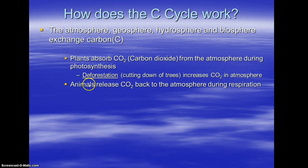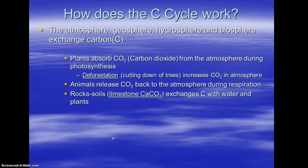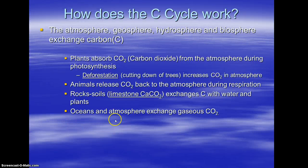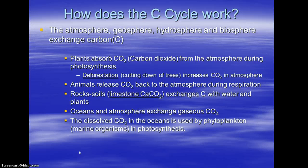Animals and plants release CO2 back to the atmosphere during respiration. Rocks and soil, part of the geosphere, contain limestone or another form of carbon, and they exchange carbon with the water and the plants — think of roots absorbing some of that carbon and water dissolving some of it. Oceans and atmosphere exchange gaseous CO2 back and forth, giving us hydrosphere-atmosphere interaction. The dissolved CO2 in the oceans is used by phytoplankton, which are marine organisms, through photosynthesis.